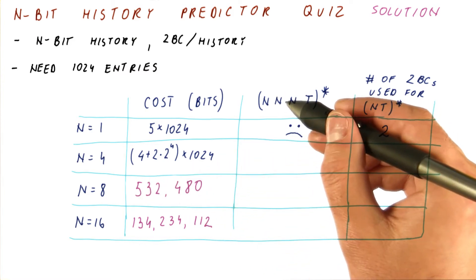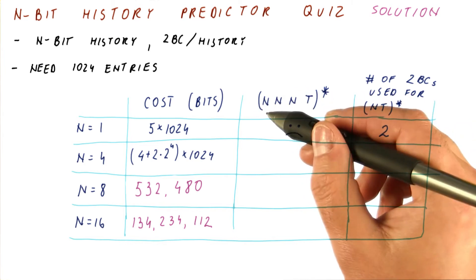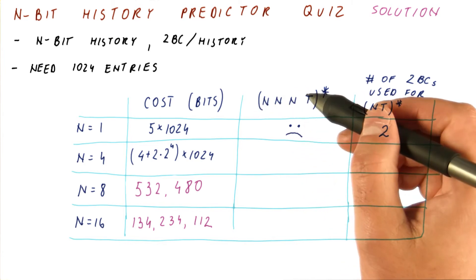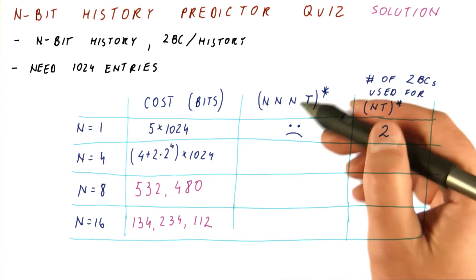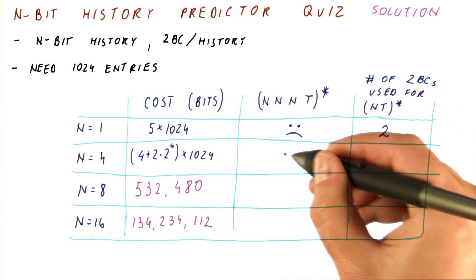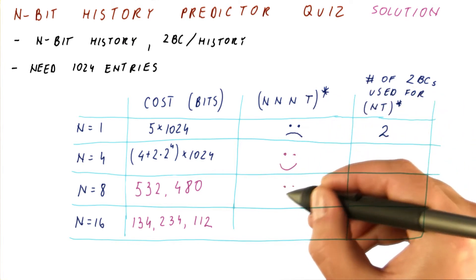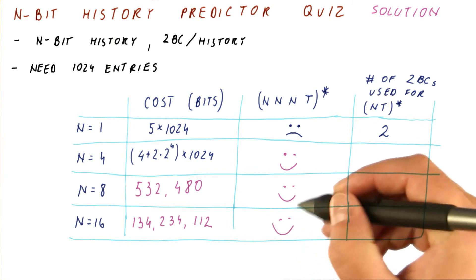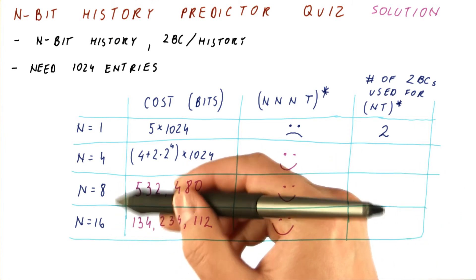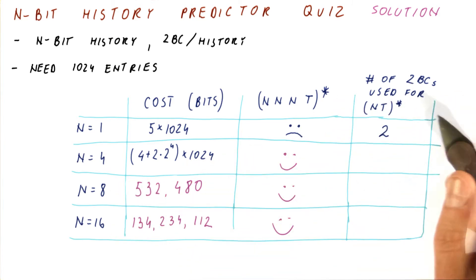Let's now see how well they do on the NNNT pattern. This is a pattern of length four, so anything that has n equal to three or more will handle it well. From that perspective, all three of these will do well. These two will do well on even longer patterns.